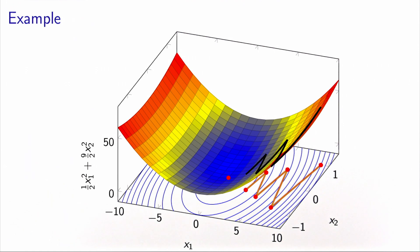After five iterations, it didn't make a lot of progress, although this looks like a very simple problem to solve. It has two variables and is a quadratic problem, but the method is taking a while to converge.